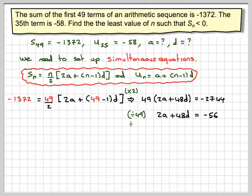Now because all these numbers are even, I can divide by 2. We're going to have A plus 24D is equal to minus 28. We'll call that equation 1.